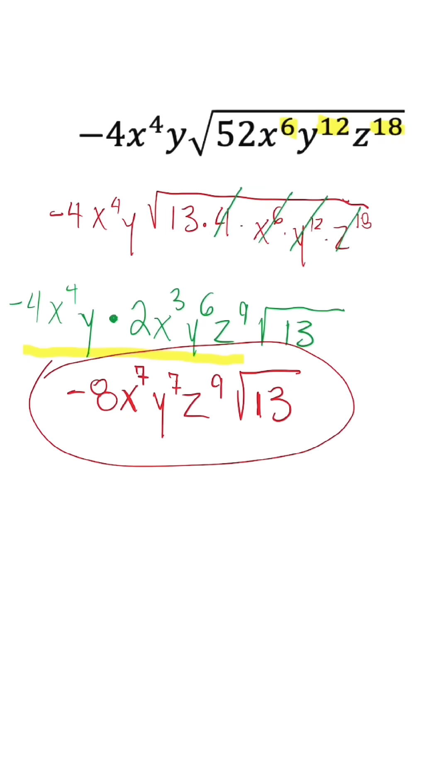So our final answer is negative 8, x to the 7th, y to the 7th, z to the 9th times radical 13.